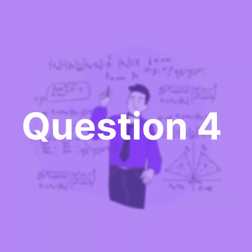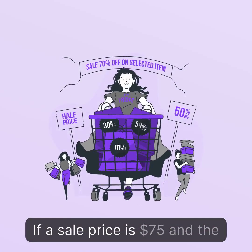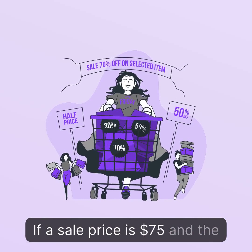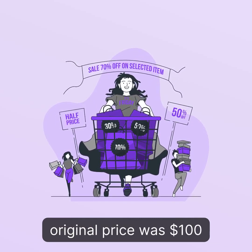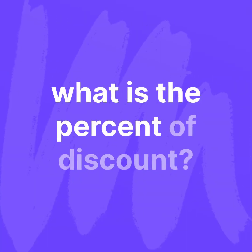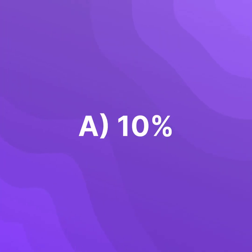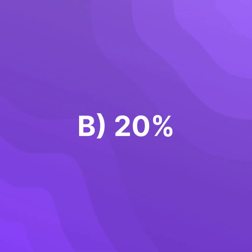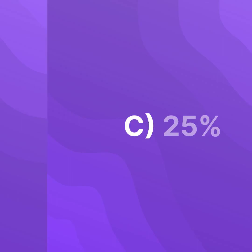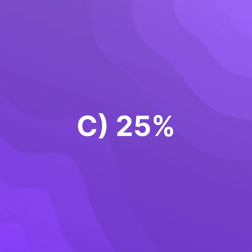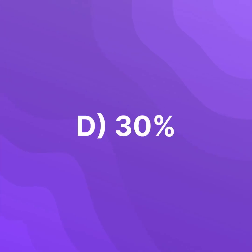Question 4. If a sale price is $75 and the original price was $100, what is the percent of discount? A. 10%. B. 20%. C. 25%. D. 30%.